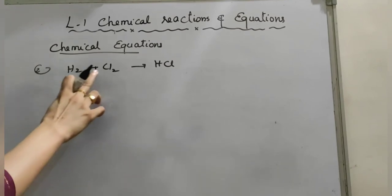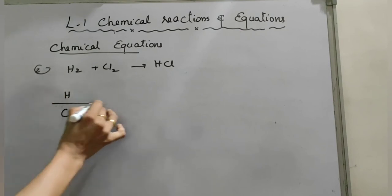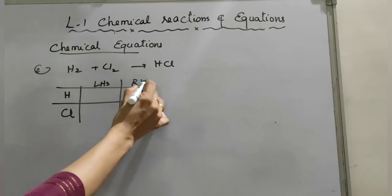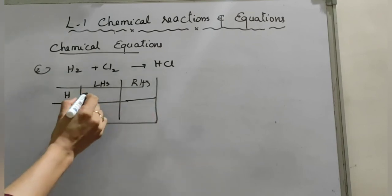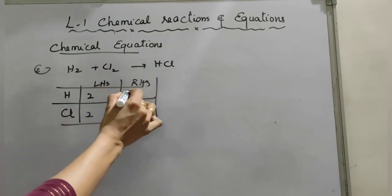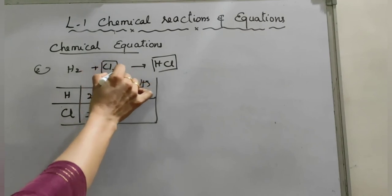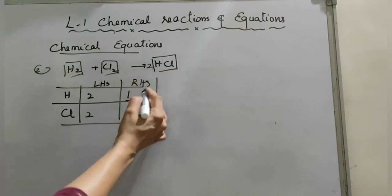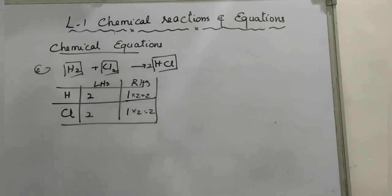Second equation: H₂ + Cl₂ → HCl. List the atoms: LHS has H=2, Cl=2; RHS has H=1, Cl=1. Put a coefficient of 2 before HCl on the RHS. Now H=2 and Cl=2 on both sides — the equation is balanced.